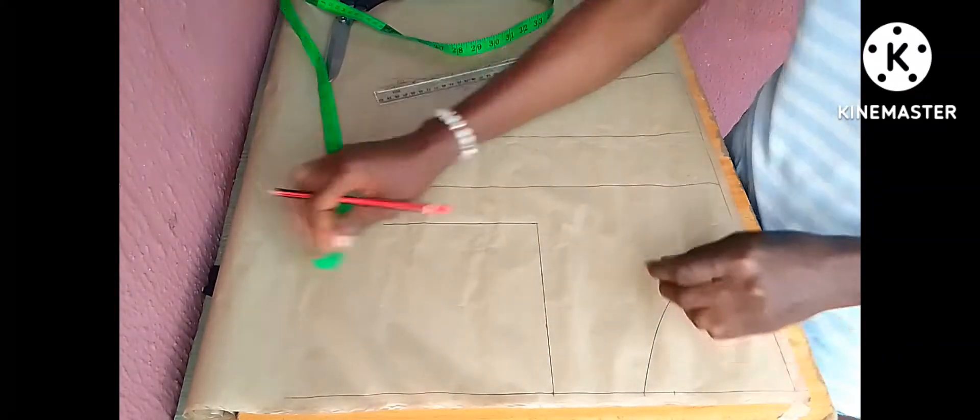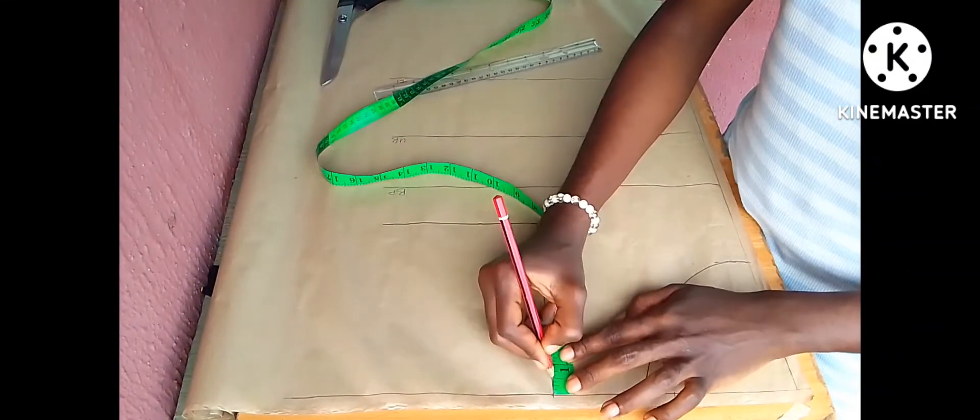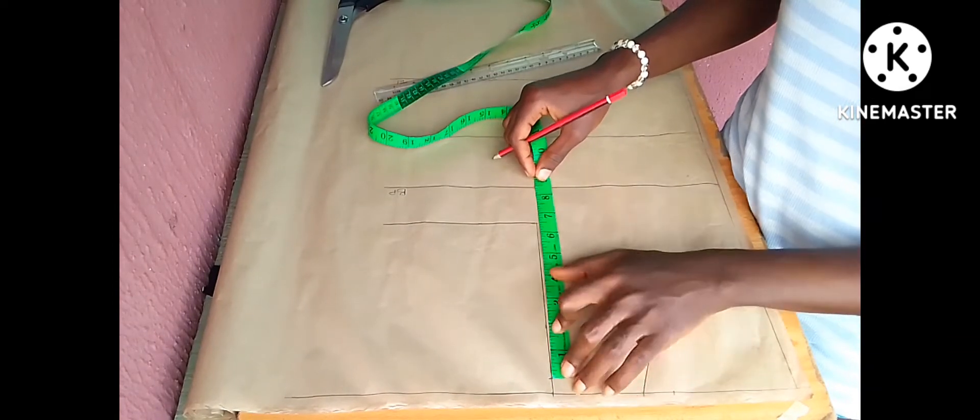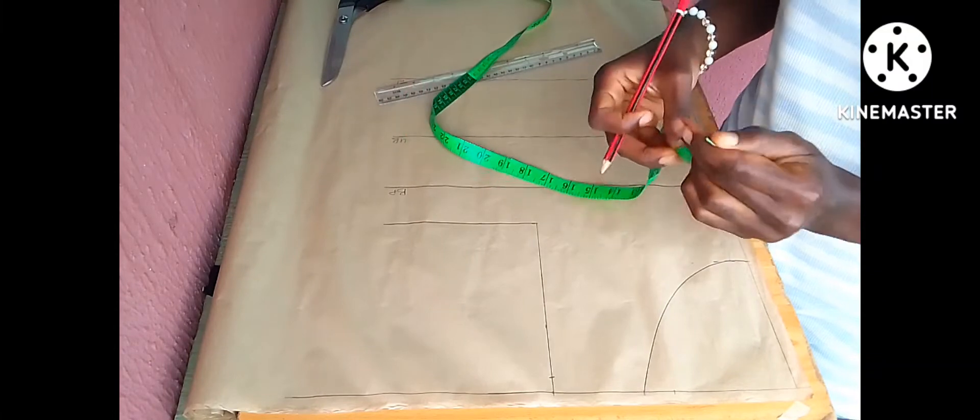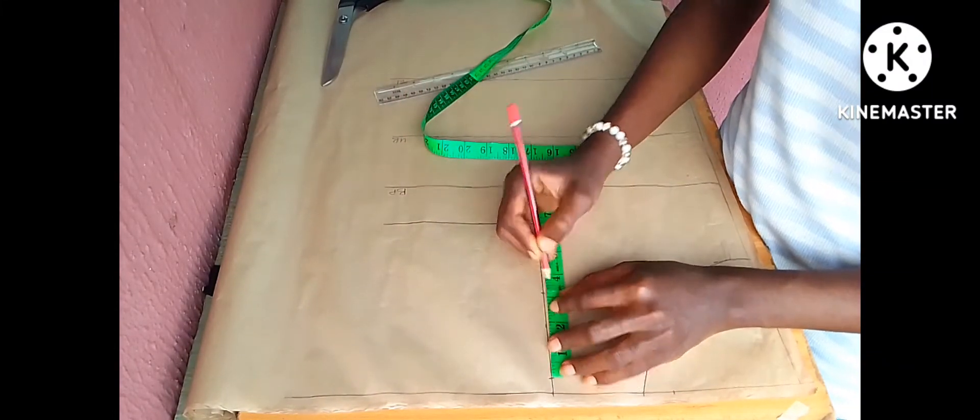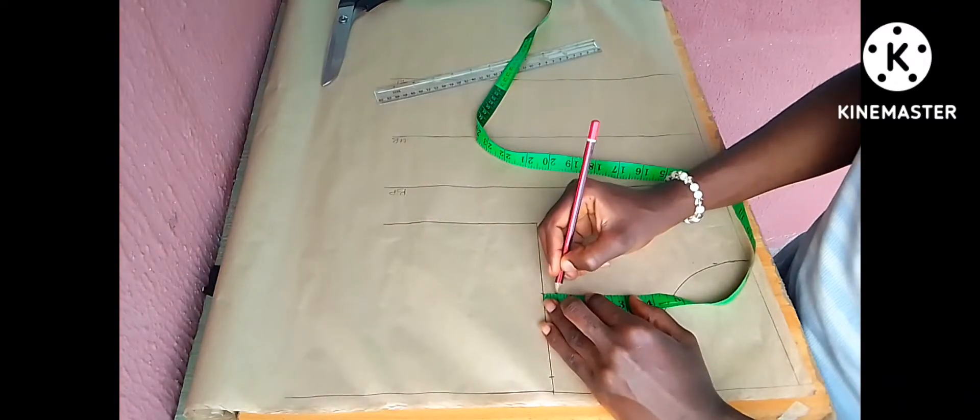Now after that, I'll have to make my shoulder slant. I'll come down from the top of my shoulder by half inch. Then whatever is remaining, I divide it by 2. Then at that point, that half, I come out by half inch like you see me doing.